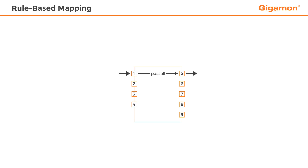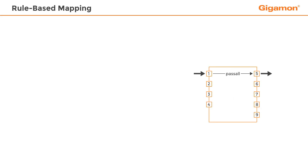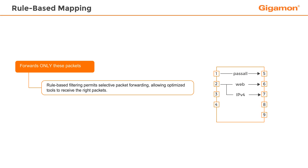Most current-day tools are optimized to perform specific jobs. Sending inappropriate packets to such tools reduces their effectiveness and ultimately increases costs. Rule-based filtering provides the ability to selectively copy traffic from one or more traffic sources to one or more tools, and thereby allows you to forward the right packets to the right tool. When an optimized tool is only presented with packets it is designed to inspect, the tool NIC will have the bandwidth to inspect more packets and the deep packet inspection processes will not be distracted with checking and discarding packets it cannot use.